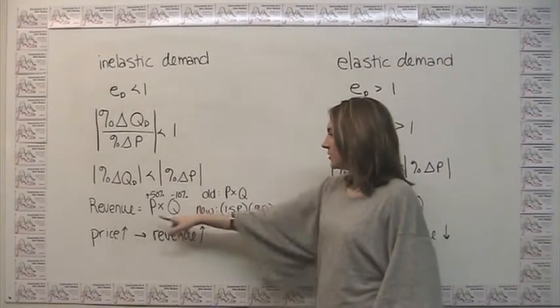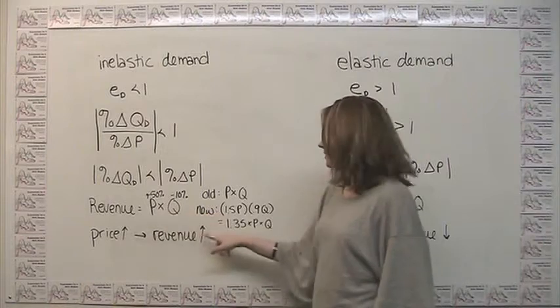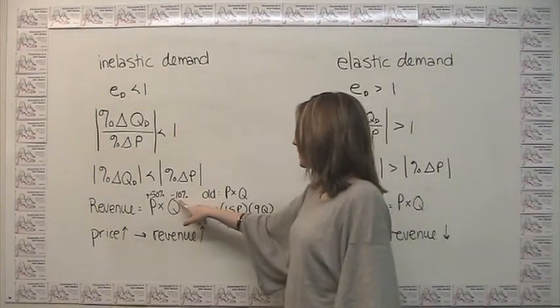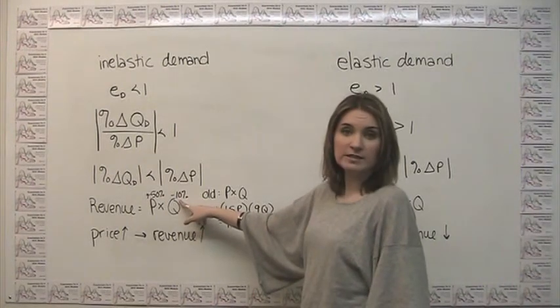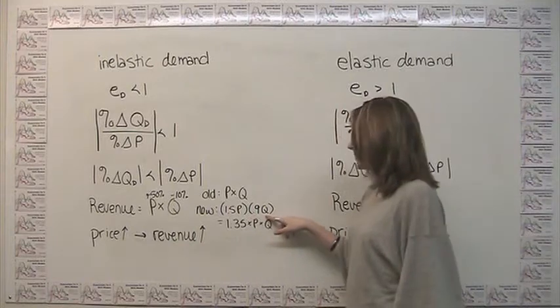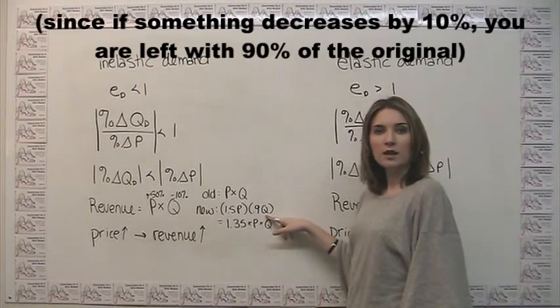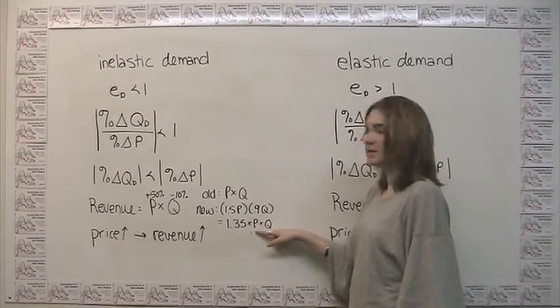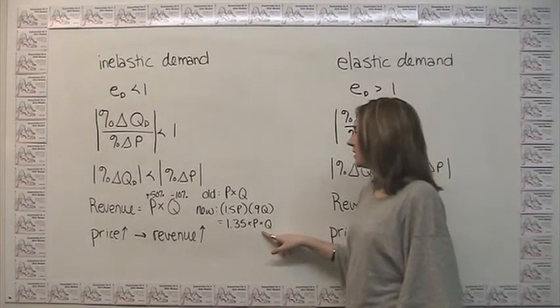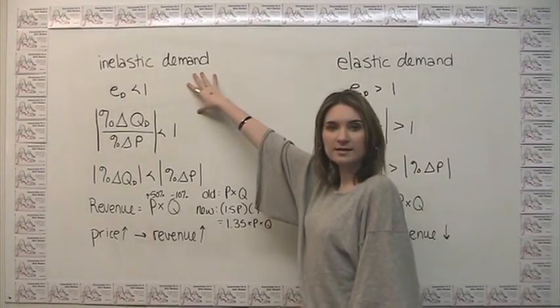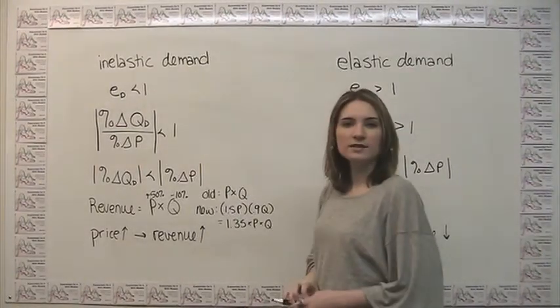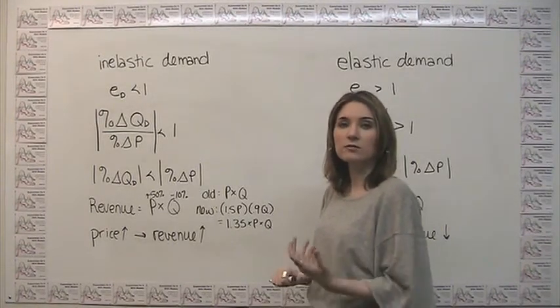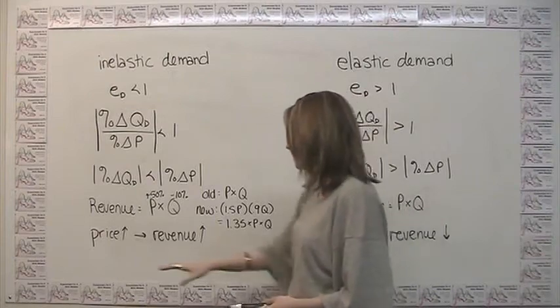Our new revenue, if our price increases by 50%, is 1.5 times the original price. And our new quantity, if our quantity decreases by 10%, is just 0.9 times the original quantity. And if we multiply this out, we end up with 1.35 times our old revenue. So what we see here is when we have inelastic demand, the change in quantity demanded is not enough to overcome that higher price, and the total revenue taken in goes up.